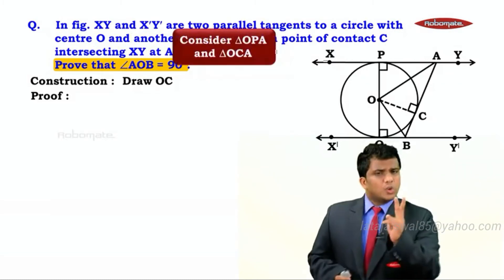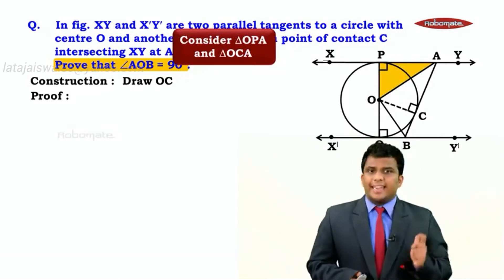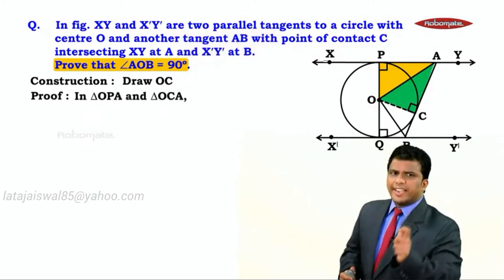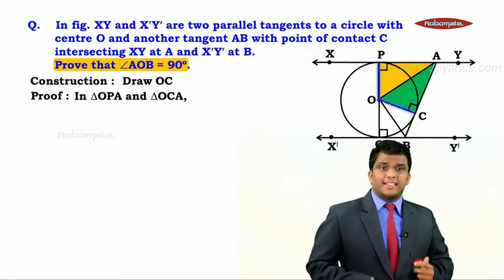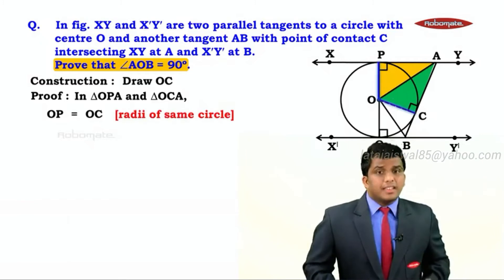Now in the figure let's look at these two special triangles: triangle OPA and its adjacent triangle OCA. Let's consider these triangles. In triangle OPA and triangle OCA, what is special about the two triangles? We can see OP equals OC because they are radii of the same circle.